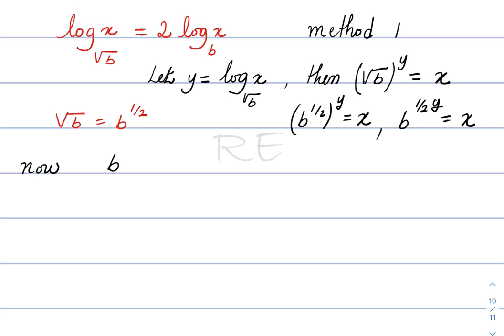Now b to the half y, squared, is equal to x squared — we squared both sides. Half y squared: one half times two is one. So it's b to the y is equal to x squared.